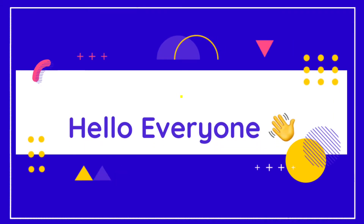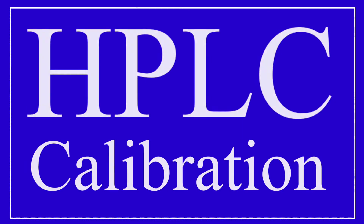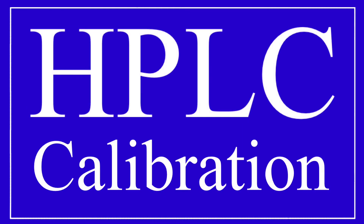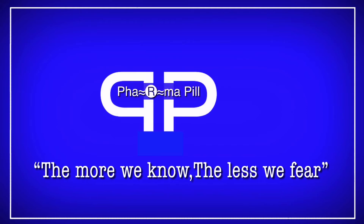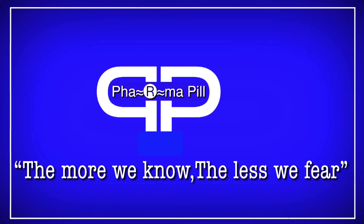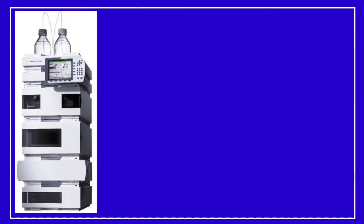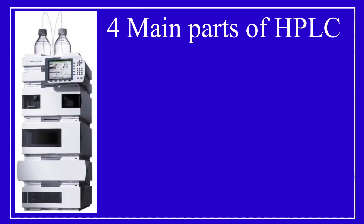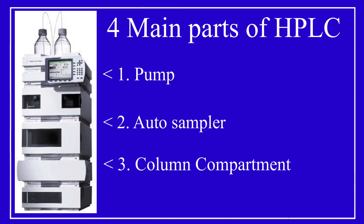Hello everyone, welcome back to yet another learning video. In this video we are going to learn about HPLC calibration. A typical HPLC instrument consists of four main parts: pump, auto sampler, column compartment, and detector. In today's video we will learn about detector calibration.